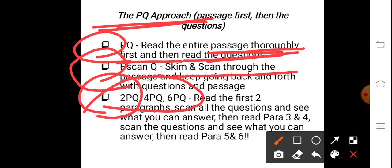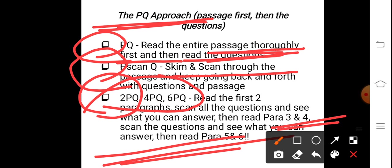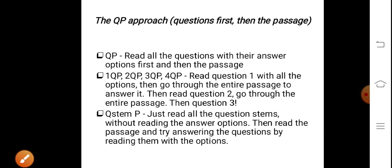When dealing with a big paragraph, follow the 2PQ, 4PQ, and 6PQ method. First read the first two paragraphs, scan all questions to see if any relate to those paragraphs, and solve them. Then come to the third and fourth paragraphs, scan the questions again for relevance, and solve. Finally go to the remaining paragraphs. It is not always the case that the first paragraph answers the first question — paragraphs and questions may be interrelated across sections.